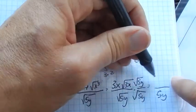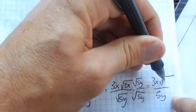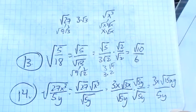And then up in the numerator, 3x. And then square root of 3 times 5 is 15. x times y is xy.